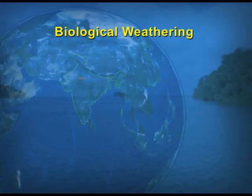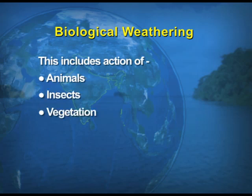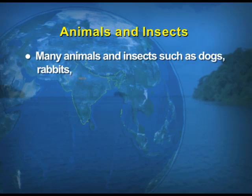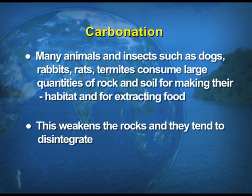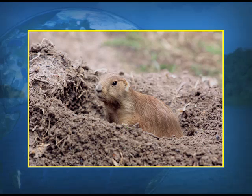Now we take up the third type of weathering — biological weathering. This includes the action of animals, insects, vegetation, and man. First, the action of animals and insects: many animals and insects such as dogs, rabbits, rats, and termites consume large quantities of rock and soil for making their habitat and for extracting food. When they burrow and dig out the rock, the rock weakens and tends to disintegrate. This visual shows how animals make their burrows and help in the disintegration of rocks.